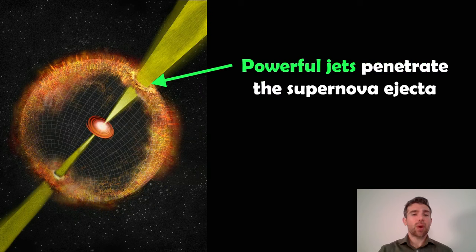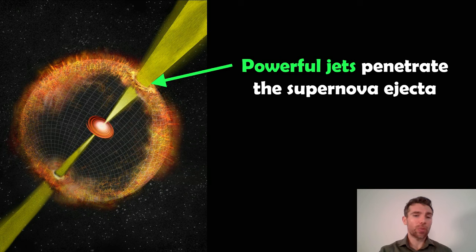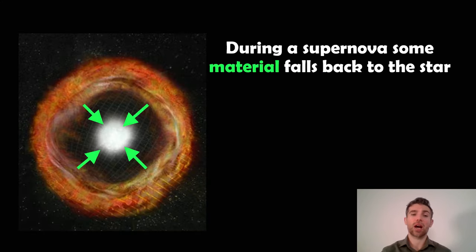Sometimes you get these powerful jets. In the case of a hypernova, you get powerful jets being produced, you get two of them, and they will penetrate the supernova ejecta. They kind of punch through essentially. Very powerful jets. Now during that supernova...